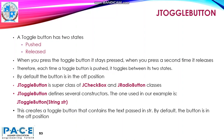JToggleButton is a superclass of JCheckbox and JRadioButton classes. JToggleButton defines several constructors. This is the one which we will use in our example — there is one parameter in the constructor, that is a string. So whatever string we pass, that will be displayed on the button. This creates a toggle button that contains the text passed as the string. By default, the button is in the off position.